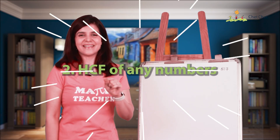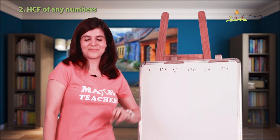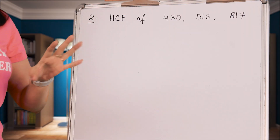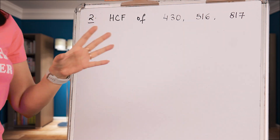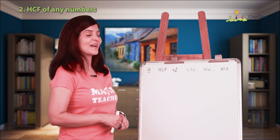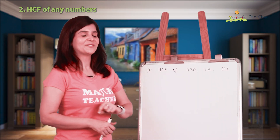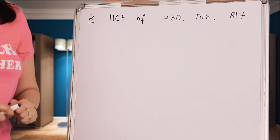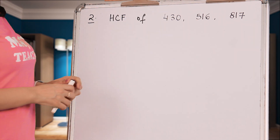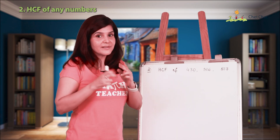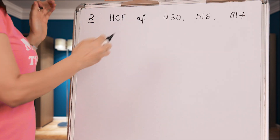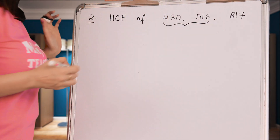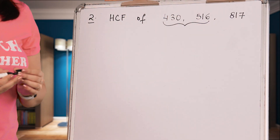Trick number two is to find the HCF of a large set of numbers. Typically you'd do prime factorization and look for the highest common factor. Here's a trick: given these three numbers, pick the two that are nearest to each other — in our case, 430 and 516.